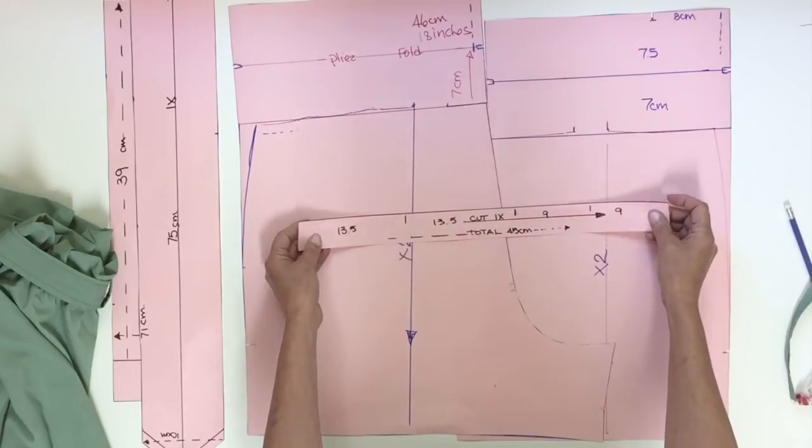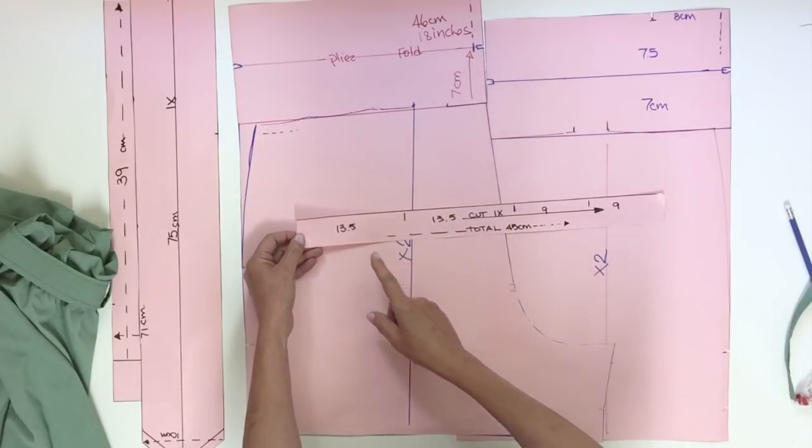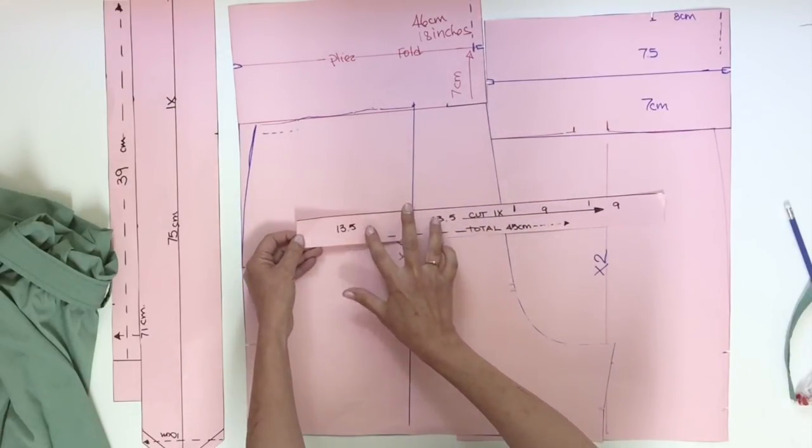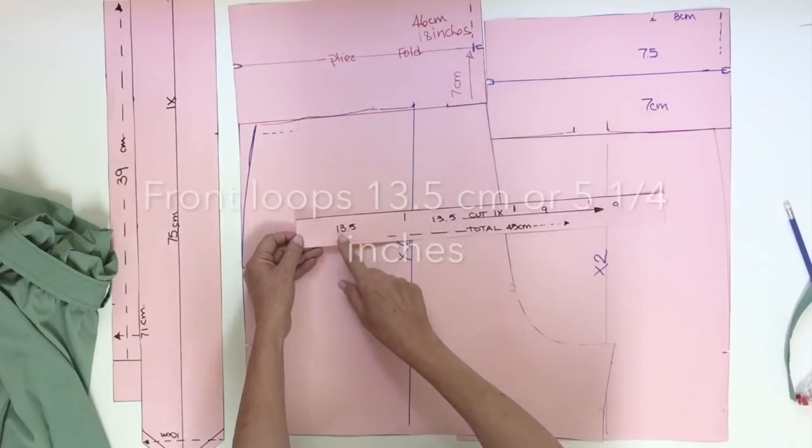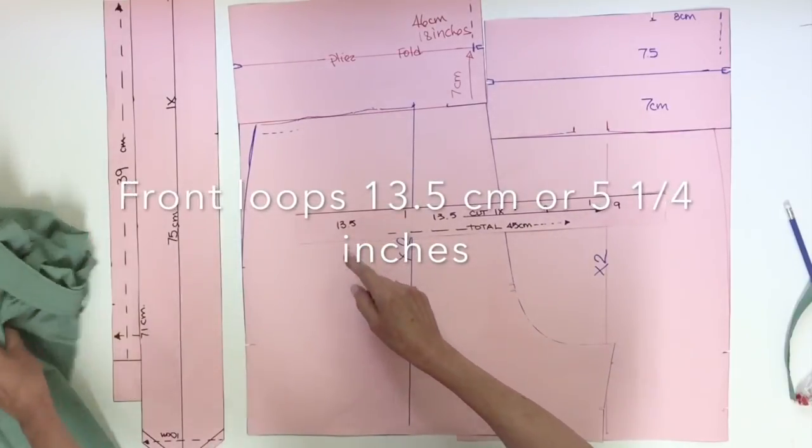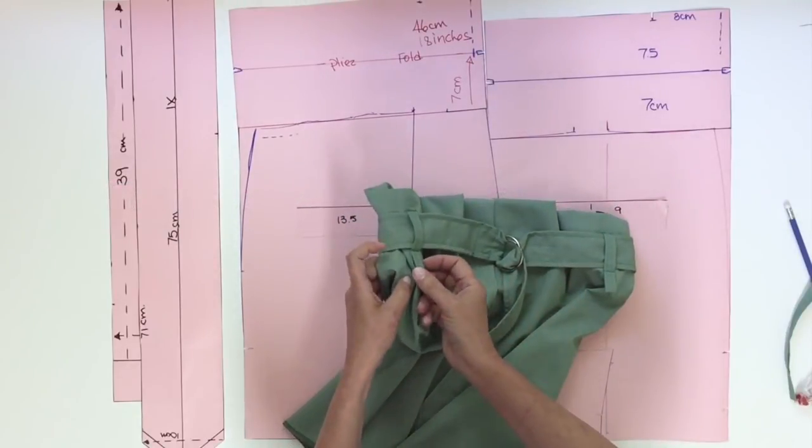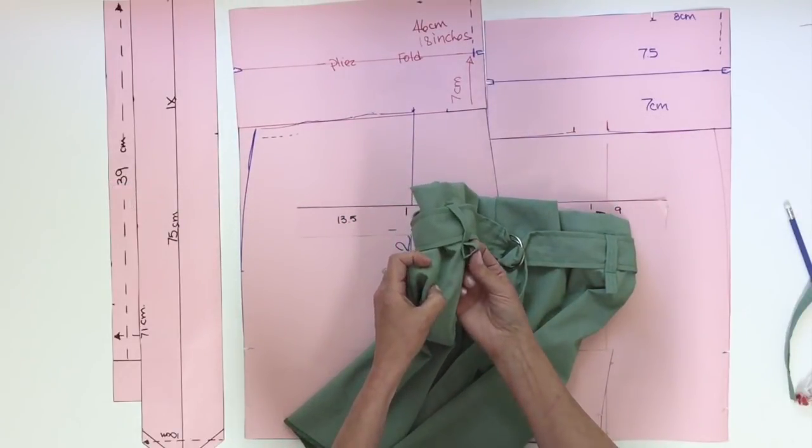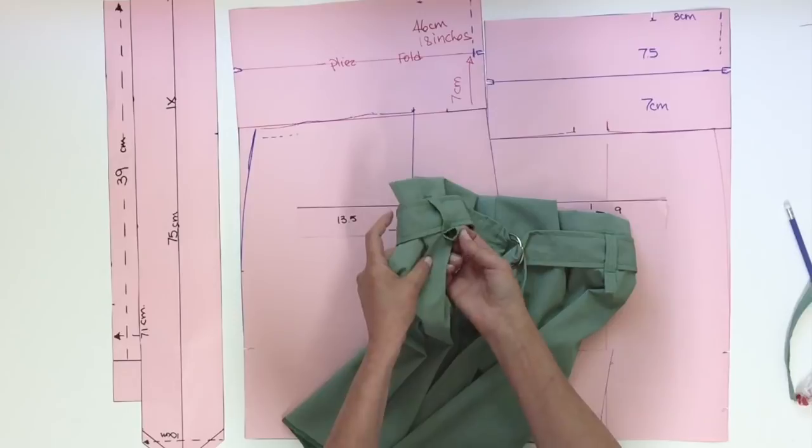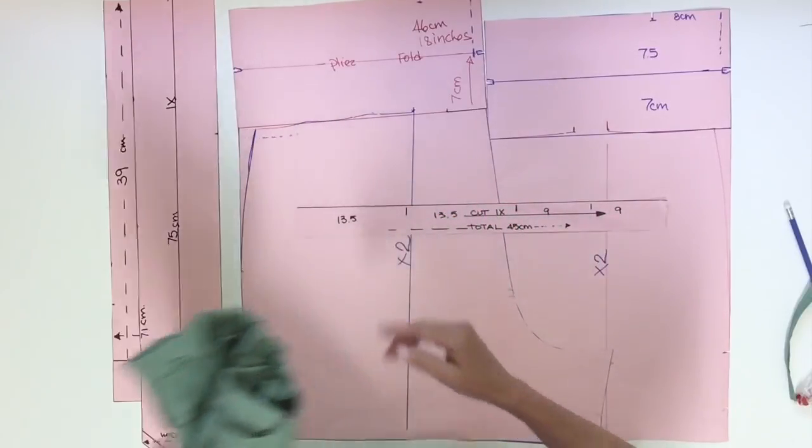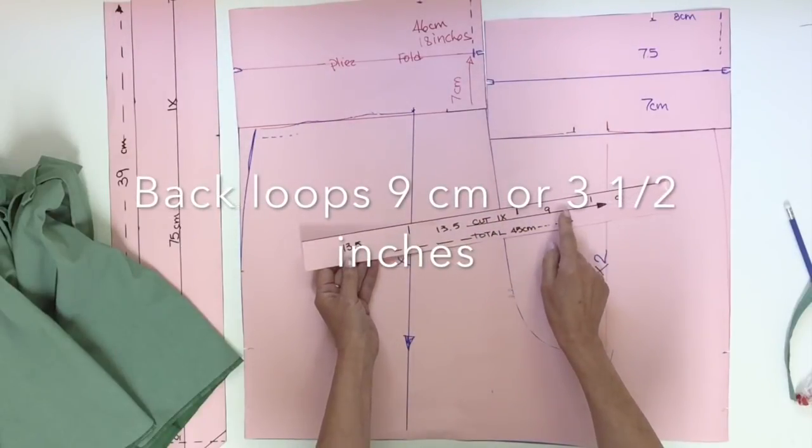Starting with the loop, I did it in one piece, so two front loops and two back loops. The front was 13.5 because if you notice, I did it extra long with a double loop at the bottom just for decoration, and the back loops were nine centimeters.